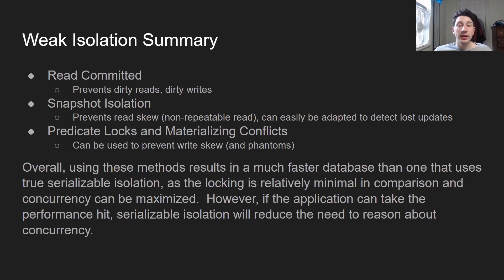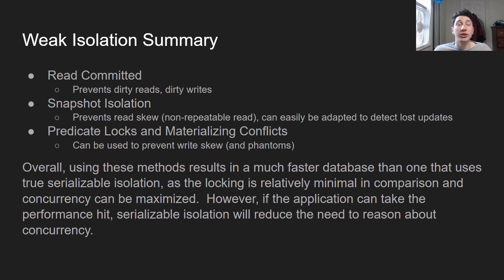To summarize: read committed isolation prevents dirty reads and dirty writes. Snapshot isolation prevents read skew — when you see the database in an inconsistent state across rows — and can be easily adapted to detect lost updates, so the developer doesn't have to deal with explicit locking. Finally, predicate locks and materializing conflicts can be used to prevent write skew and phantoms, which is when you read a bunch of rows in a query, use that as your predicate, and either change an existing row or write a new row. When you can handle the performance load, you should just use serializable isolation because it's simpler to reason about and you don't have to worry about which concurrency bugs your weak isolation levels may have missed.